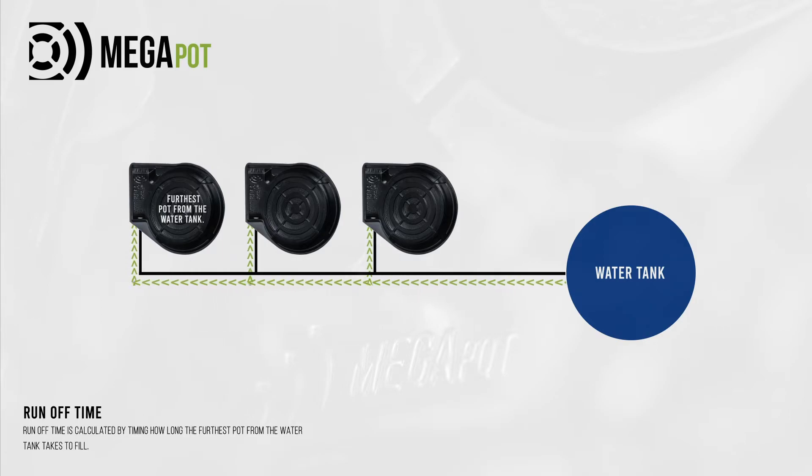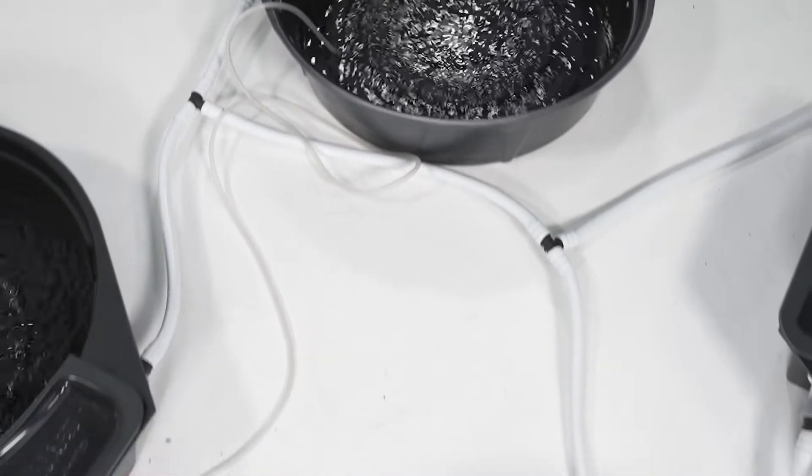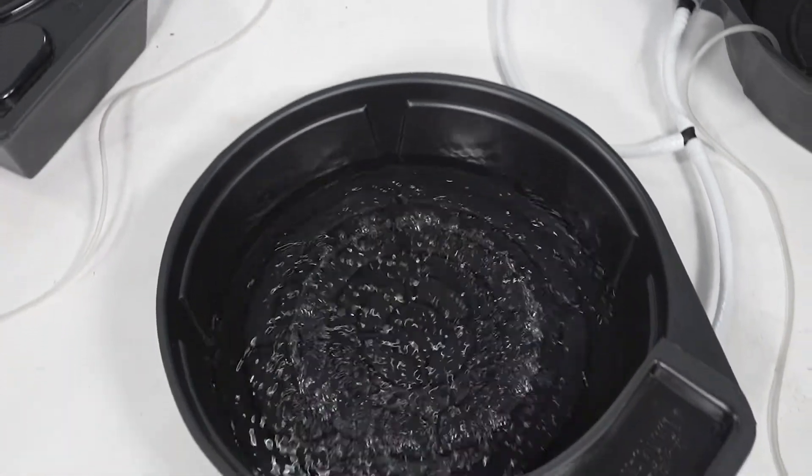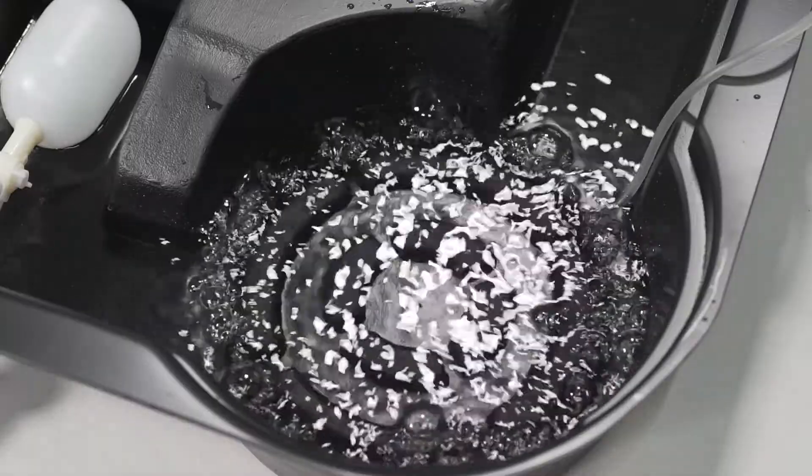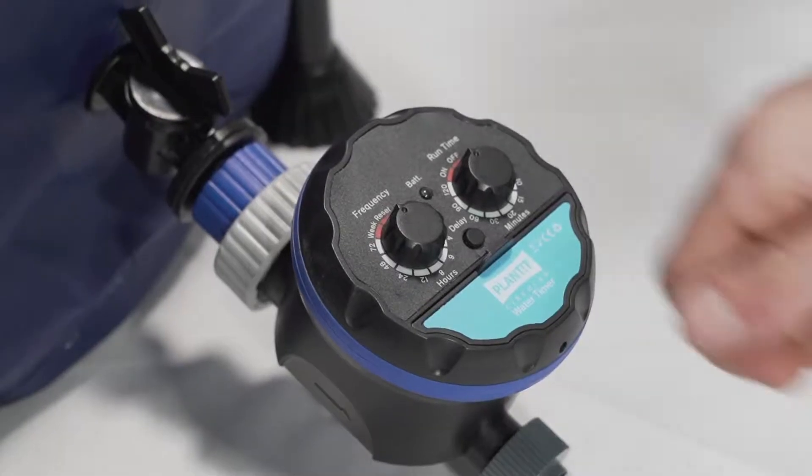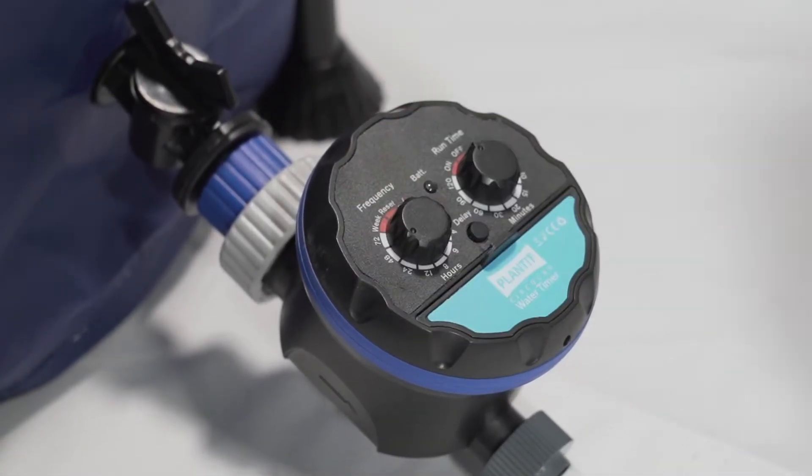In this example, our runoff time is 10 minutes. Once your roots are established and you've finished top feeding, we recommend setting your runoff time to run every 48 hours. To do this using the Plant-It timer, turn the first dial to 48 hours and the second to 10 minutes.